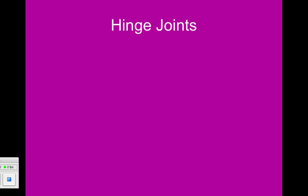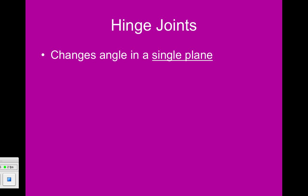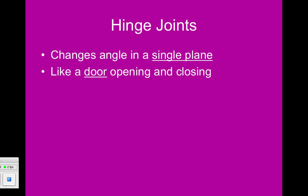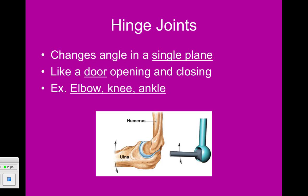Hinge joints involve changing the angle of the joint in a single plane — much like a door opening and closing. You wouldn't expect a door to slide upward when opening or downward when closing. Examples of hinge joints are the elbow, the knee, and the ankle — a simple up and down motion. With the elbow specifically, this involves the ulna and the humerus; the ulna also interacts with the radius, providing a different type of movement.